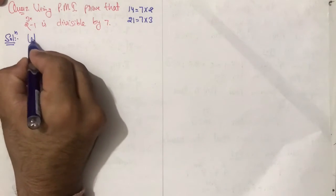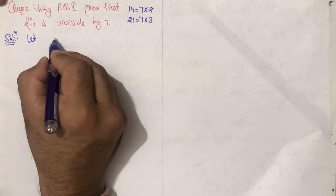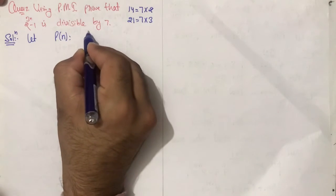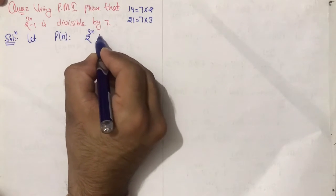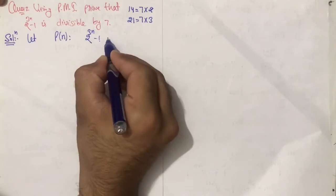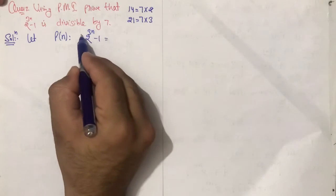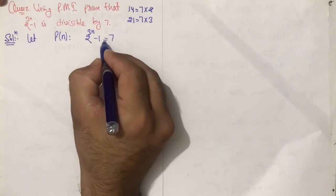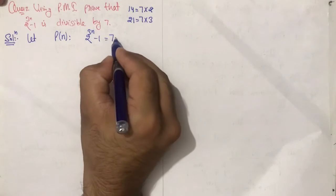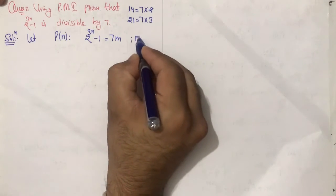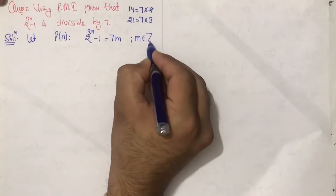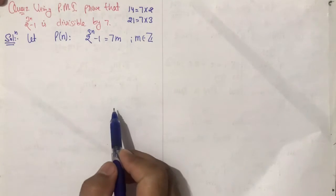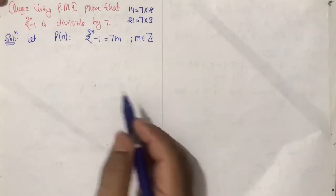So یہاں پر let کر لیتے ہیں: let P(n) be 2 raised to power 3n minus 1, which is equal to — ہمیں prove کرنا ہے یہ 7 سے divisible ہے۔ اس کا معنی لگ، this will be equal to 7 into m, where m belongs to the set of integers۔ یہاں پر m کی کوئی integral value ہوگی۔